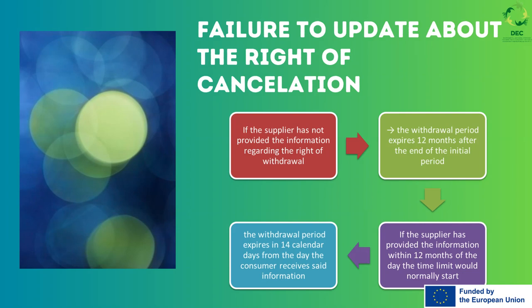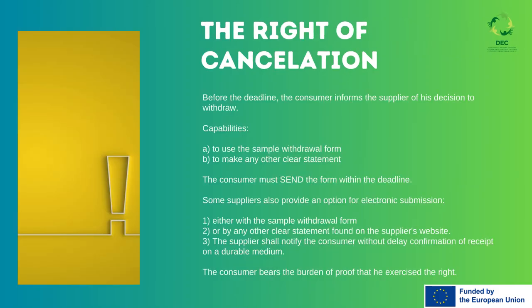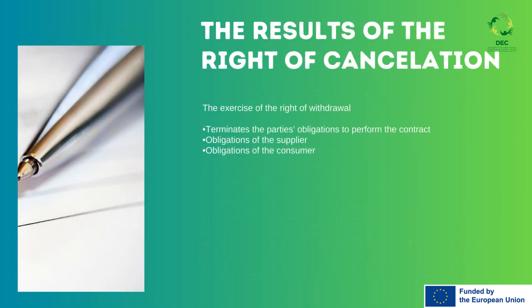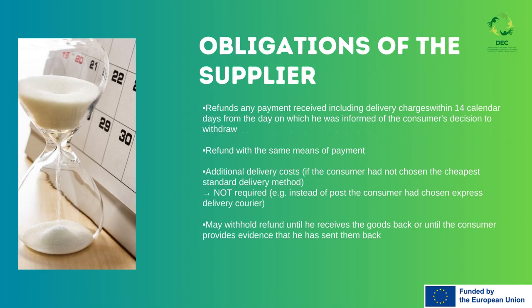If the information is promptly provided, the period expires in 14 days. This is the case where the consumer notifies the supplier that they are no longer in need of the product or service. The consumer shall fill in the cancellation form and make any other clear statement. The act of cancellation terminates any party's obligations. The supplier shall proceed with refunds if applicable. It is not required to cover courier costs, and the supplier can withhold the refund until the goods are returned and confirmed to be in good shape.